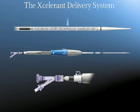The stent graft is constrained inside the Accelerant Delivery Catheter. The Accelerant Delivery System consists of a single-use, disposable catheter with an integrated handle to provide controlled deployment, a flexible catheter assembly compatible with .035-inch guide wire, runners that reduce friction between the AneuRx stent graft and the graft cover, an atraumatic, radiopaque, tapered tip to facilitate tracking through tortuous vessels, a radiopaque marker band at the distal end of the stent graft, and a marker on the end of the graft cover to aid in fluoroscopic visualization.